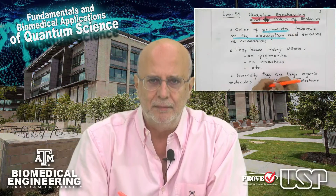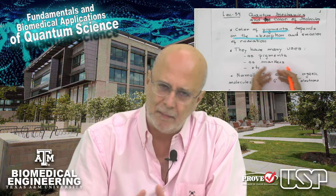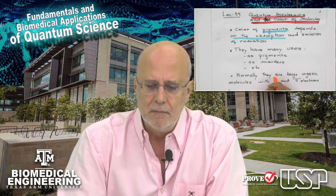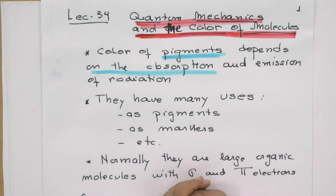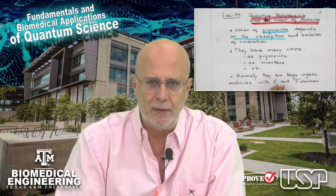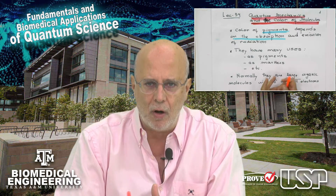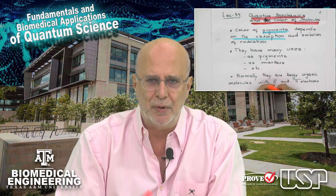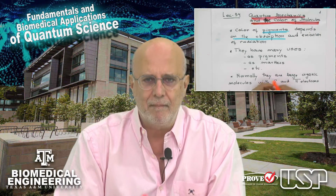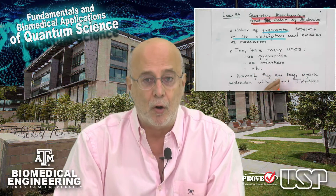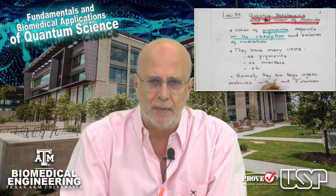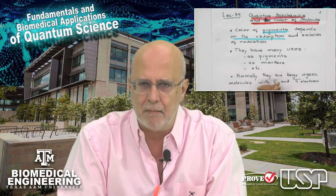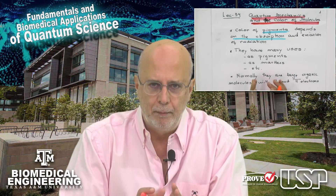I want to tell you how to calculate some properties — to apply the quantum mechanics we have learned to understand the properties of those important molecules called pigments. I'm also going to explain how we see colors, because we are also an important detector. The pigment or the color of things will not make sense if we don't observe it. But mostly everything is related to molecules.